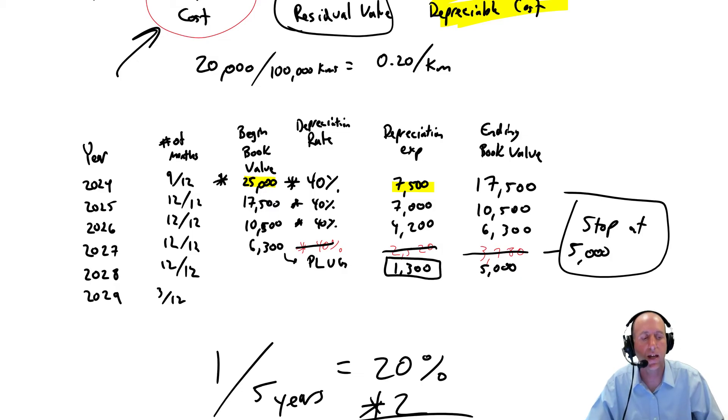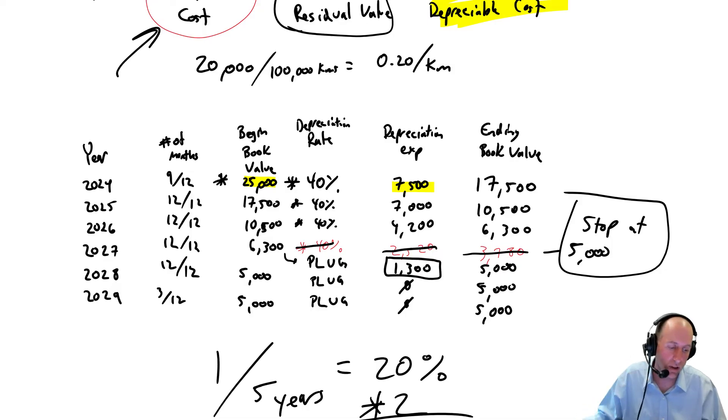What we should have done was rather than taking a depreciation rate of 40%, we should have just plugged. That's the technical term for it. We're going to plug in the number that makes this work. I want to end at $5,000. How do I go from $6,300? Let's make our ending balance $5,000. How do I go from $6,300 to $5,000? It would take depreciation of $1,300. And that number is a plug, P-L-U-G. I've gotten to my ending book value that I wanted.